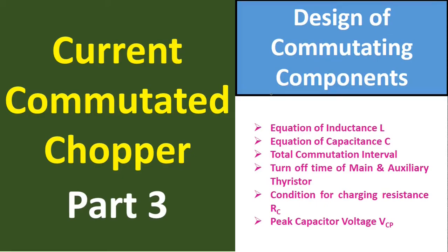Under this we are going to discuss the following topics: first, the equation of inductance L; then we are going to derive the equation of capacitance C; then the total commutation interval; then the turn-off time of the main and auxiliary thyristor; then the condition for charging resistance RC; and lastly we will derive the peak capacitor voltage, represented by VCP.